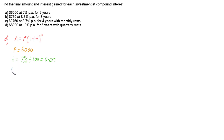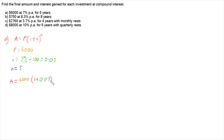N is how many compounding periods we have altogether. We've got five years worth of compounding periods, and since it's happening annually — once per year — N is just 5. Now substituting into our rule, A equals 6,000 multiplied by 1 plus 0.07, all to the power of 5. Plugging that into a calculator, the final amount is $8,415.31.